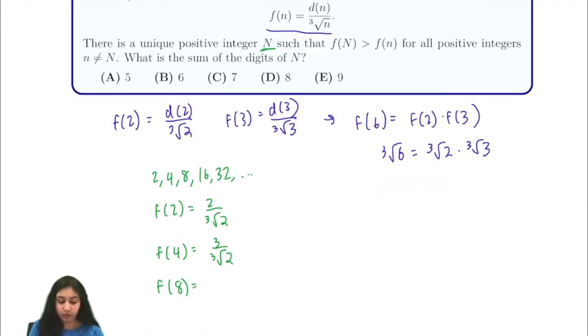4 over the cube root of 8, this is just 2, and we'll notice that f(16) is where it starts to decrease.